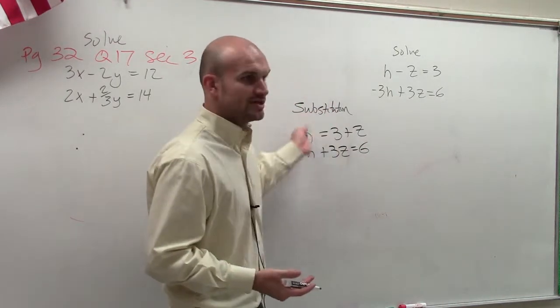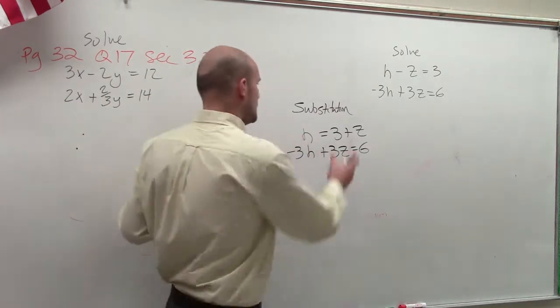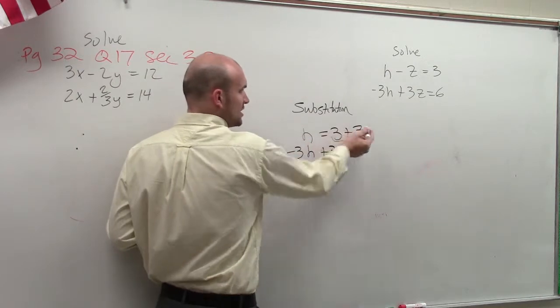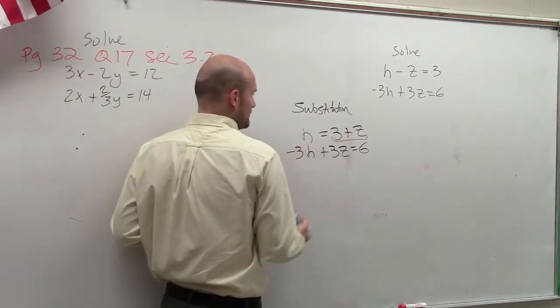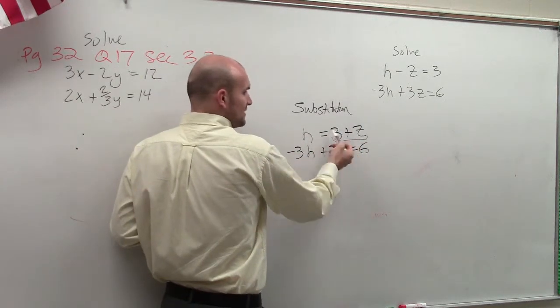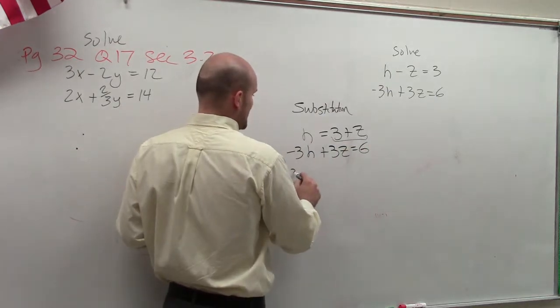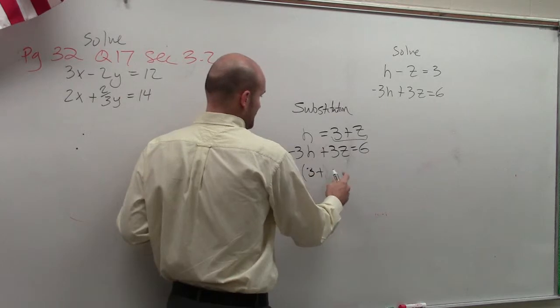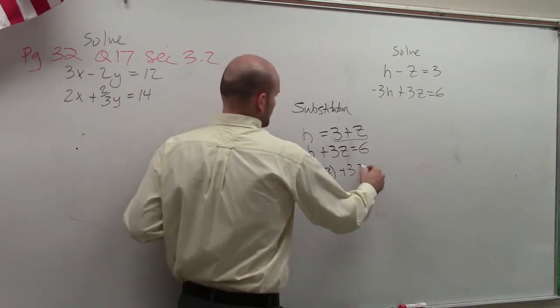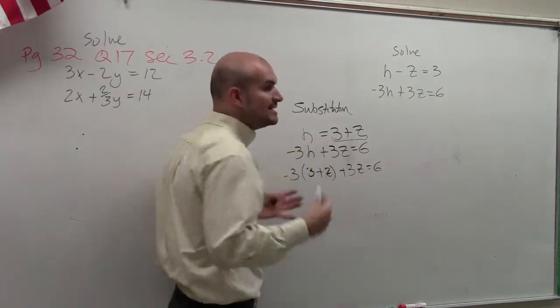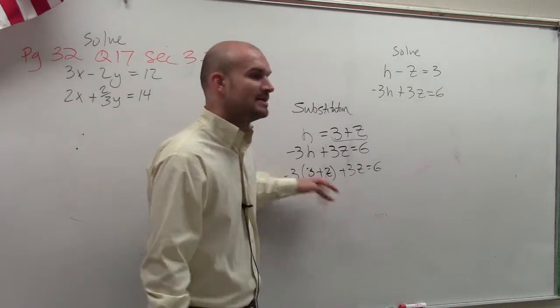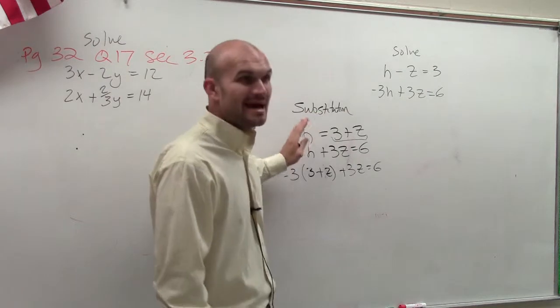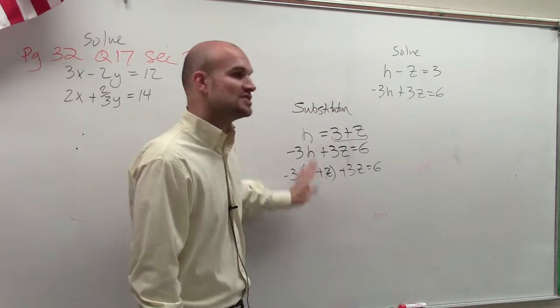Then once we have one equation solved for a variable, you plug in your expression in for that variable. Because they substitute for one another, right? h is equivalent to 3 plus z. So I do negative 3 times (3 plus z) plus 3z equals 6. And the reason why we do this, ladies and gentlemen, is because now what I've done is I have gotten rid of my h. So I can solve an equation with one variable.